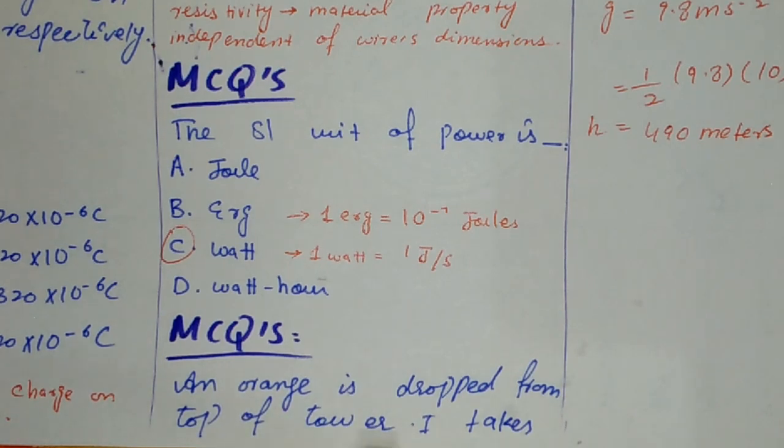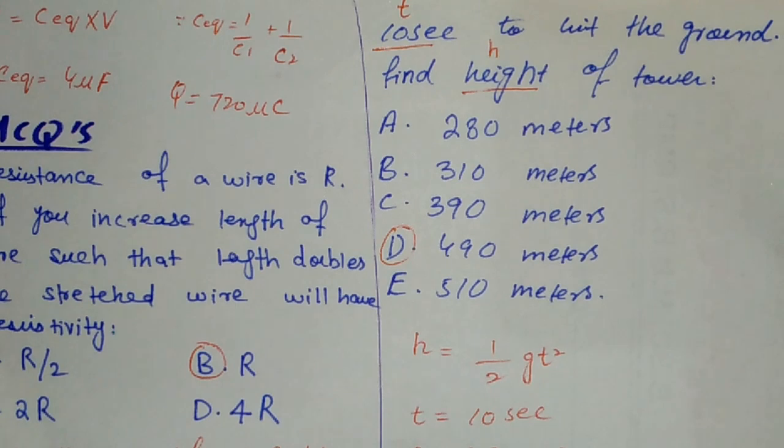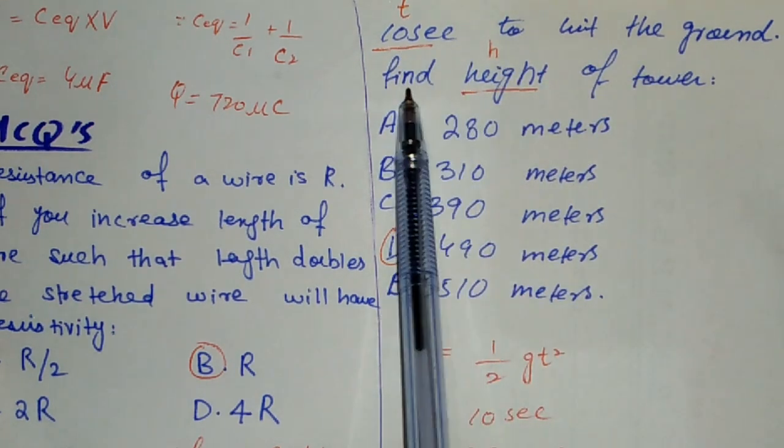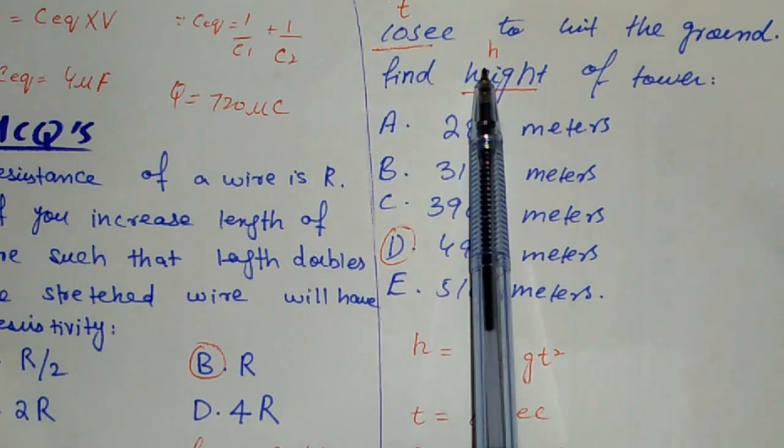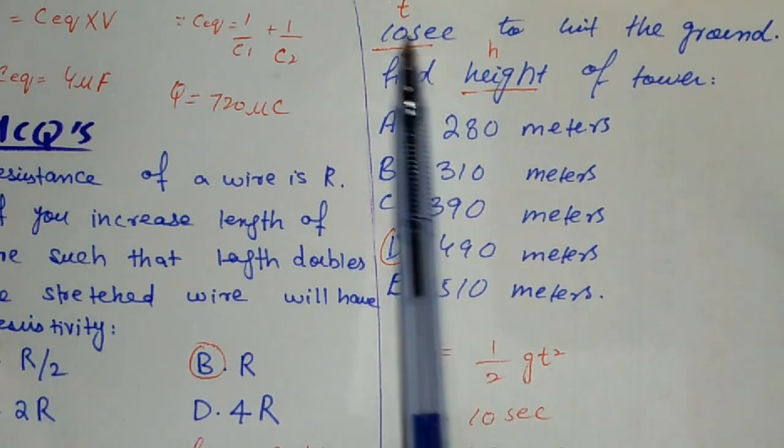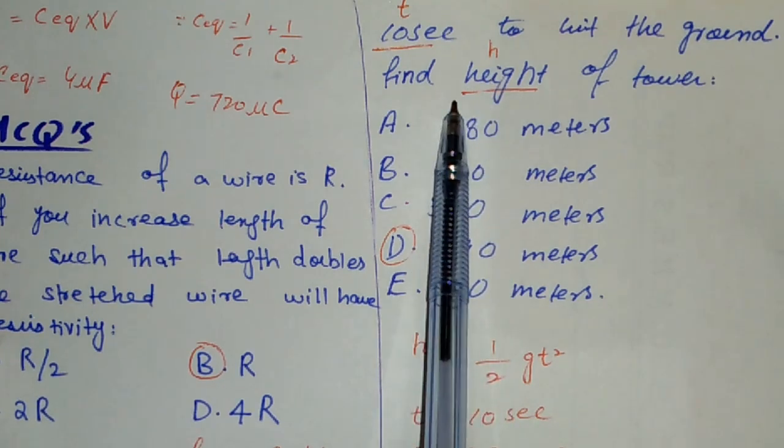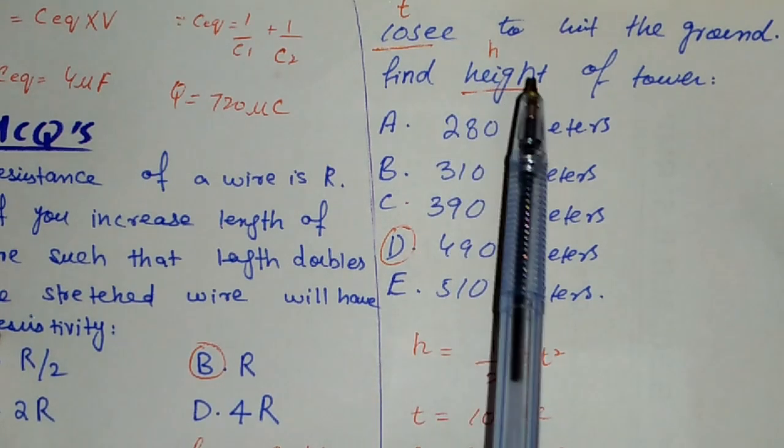Let's look at one more. An orange is dropped from the top of a tower. It takes 10 seconds to hit the ground. We have to find the height of the tower. We have time and need to find height. Which formula can we use?